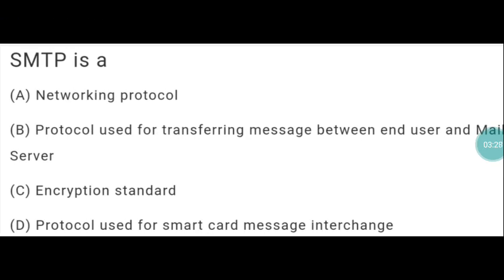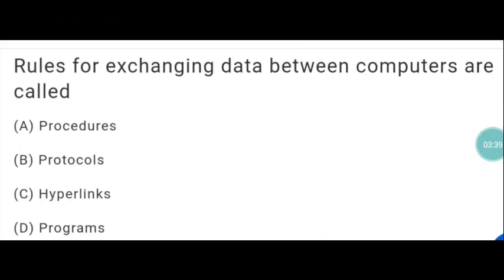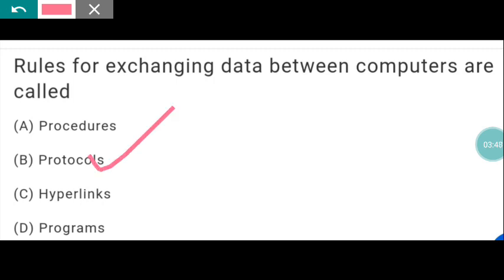Next question: SMTP is — the answer is B — the protocol used for transferring messages between end user and mail server. Next question: rules for exchanging data between computers are called protocols.